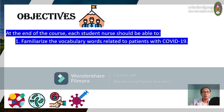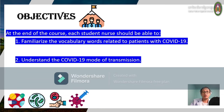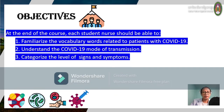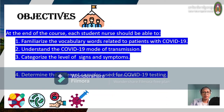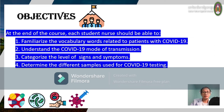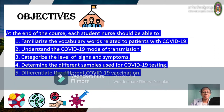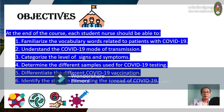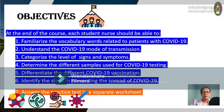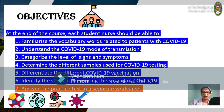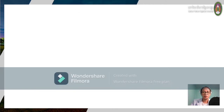The objectives of this topic: each student should be able to familiarize vocabulary words related to patients with COVID — the mode of transmission, the signs and symptoms, samples used for testing, the different COVID-19 vaccinations, preventing the spread of COVID-19 infection, and the last one would be practice tests in a separate portion.